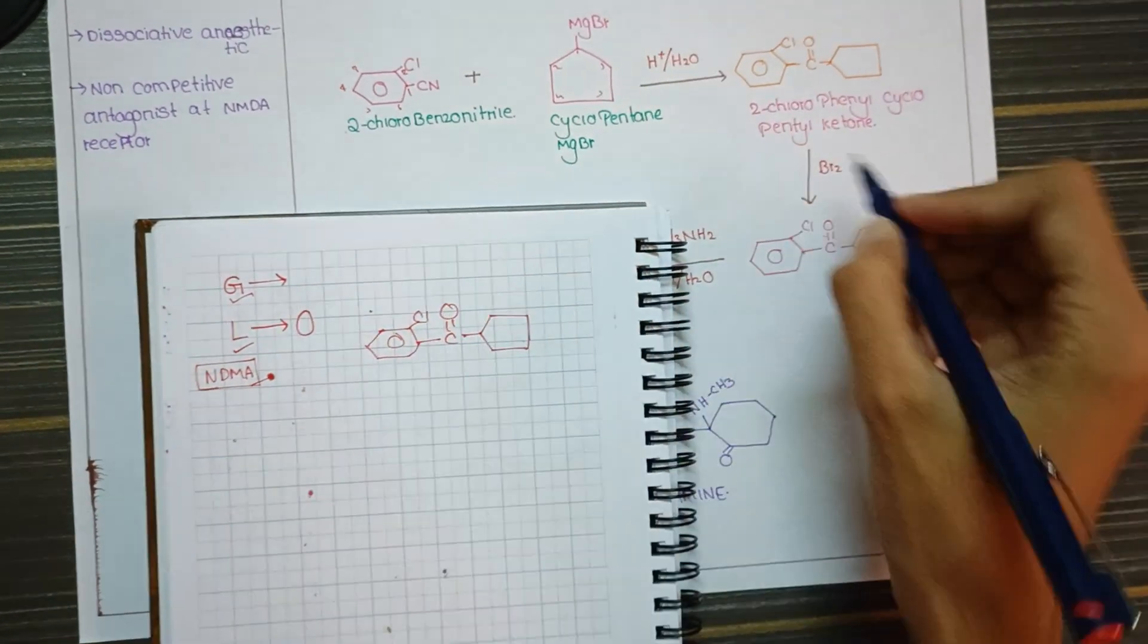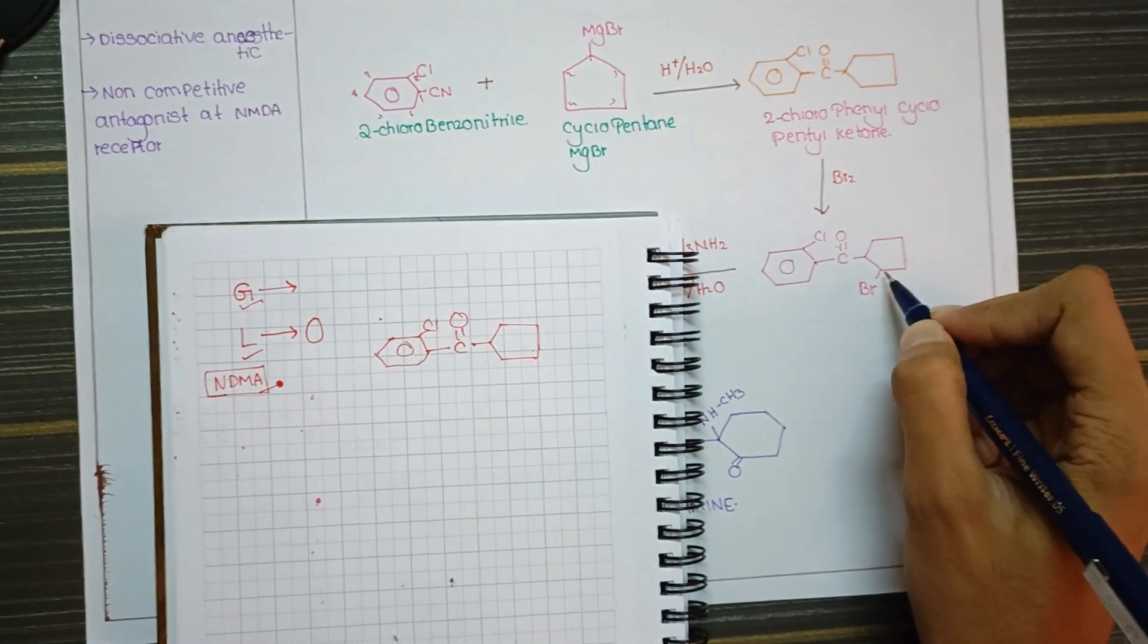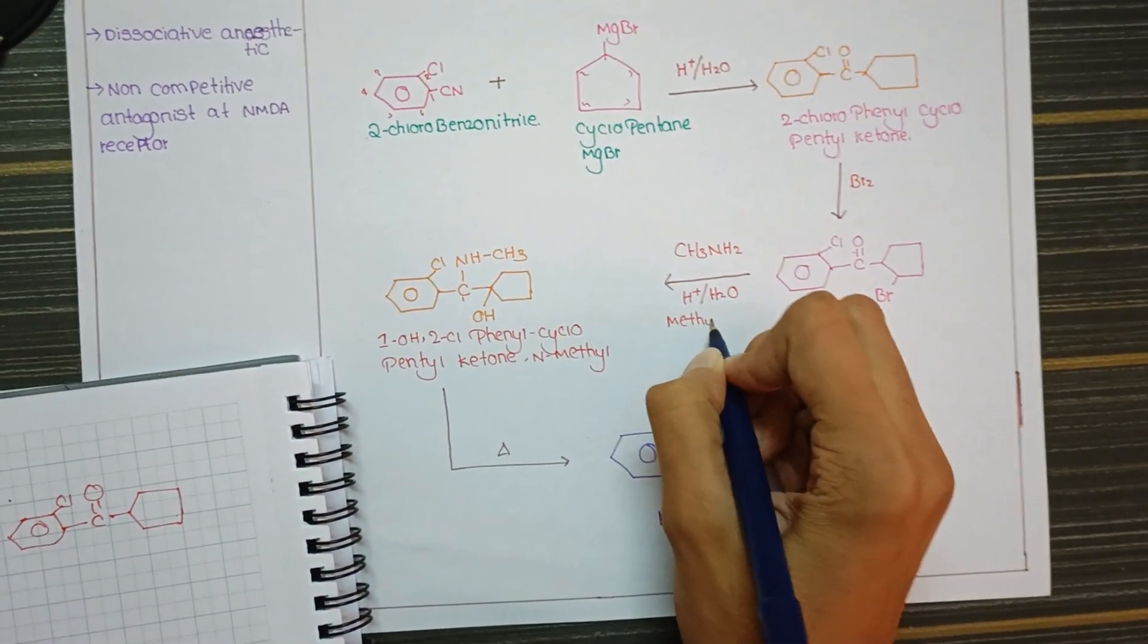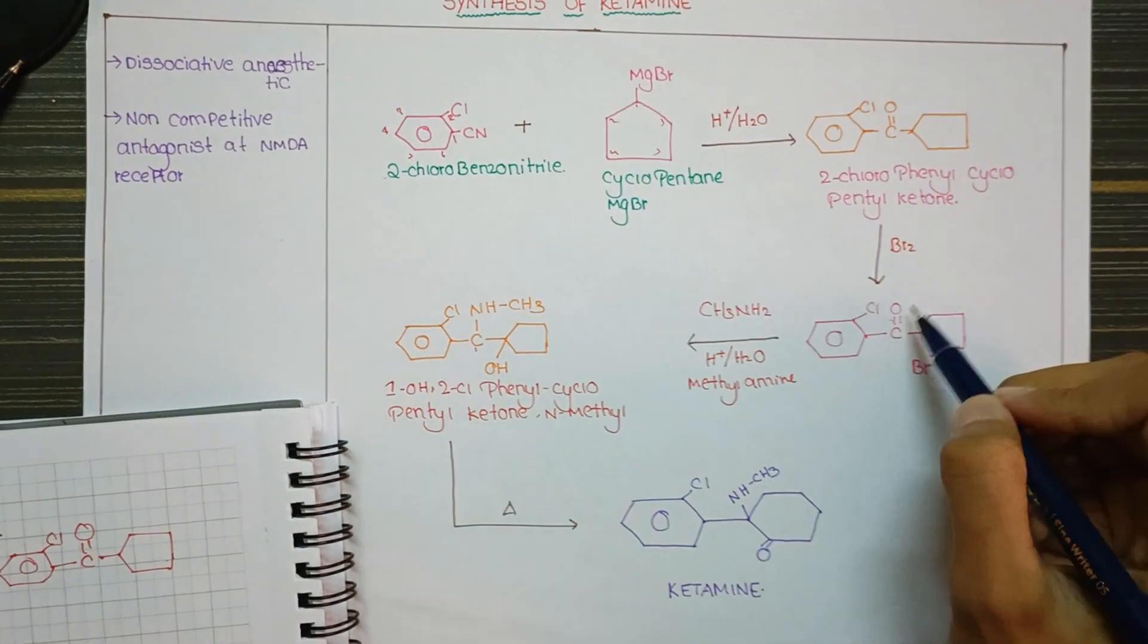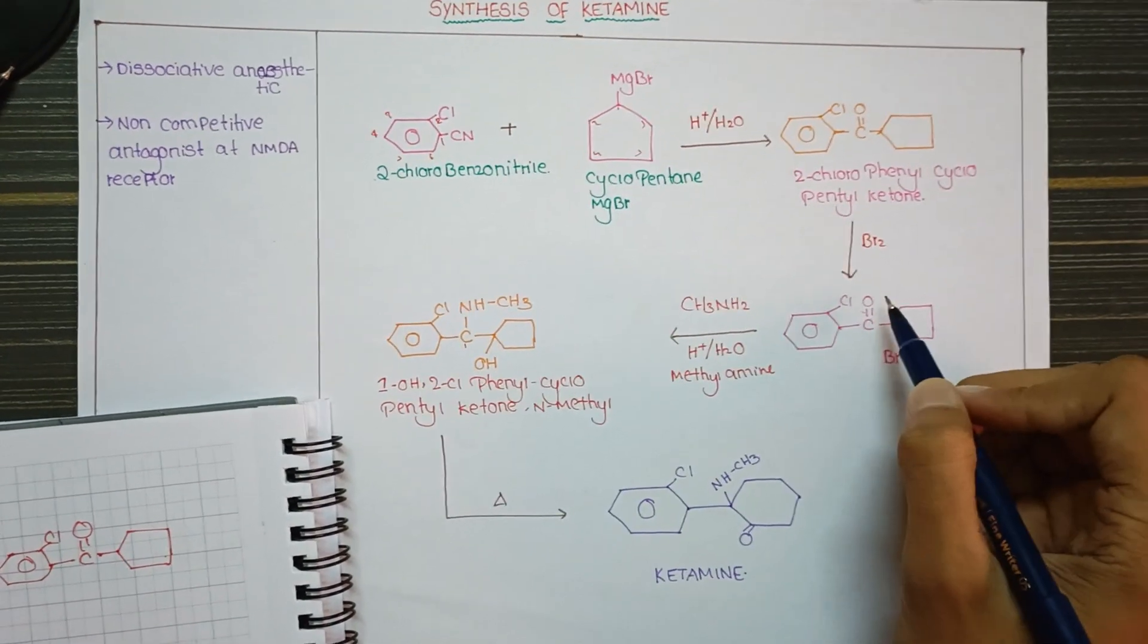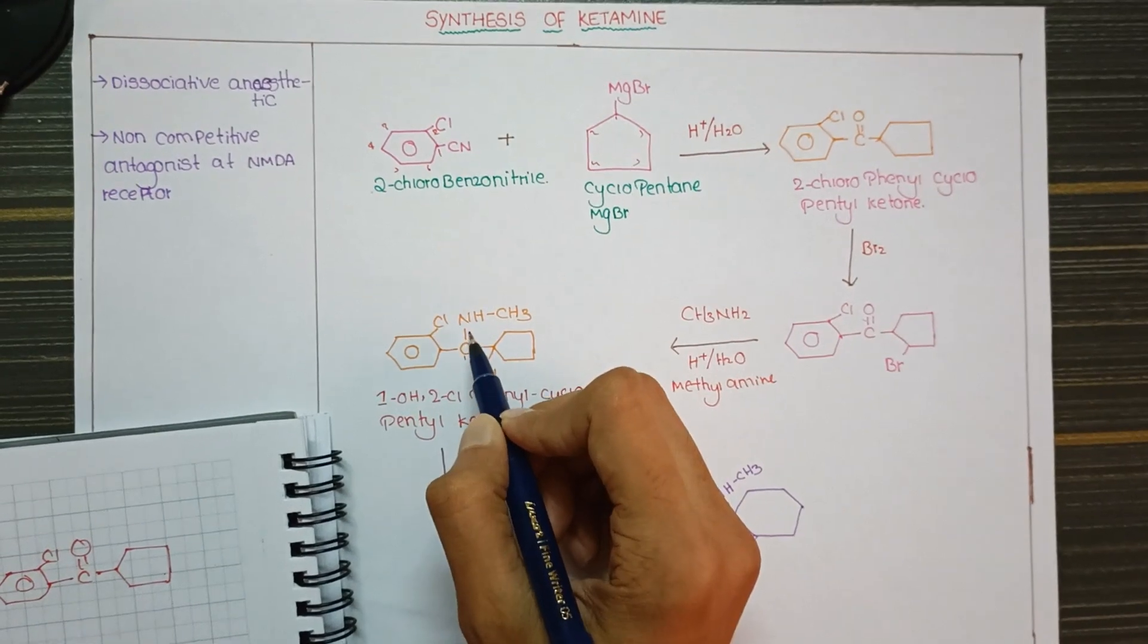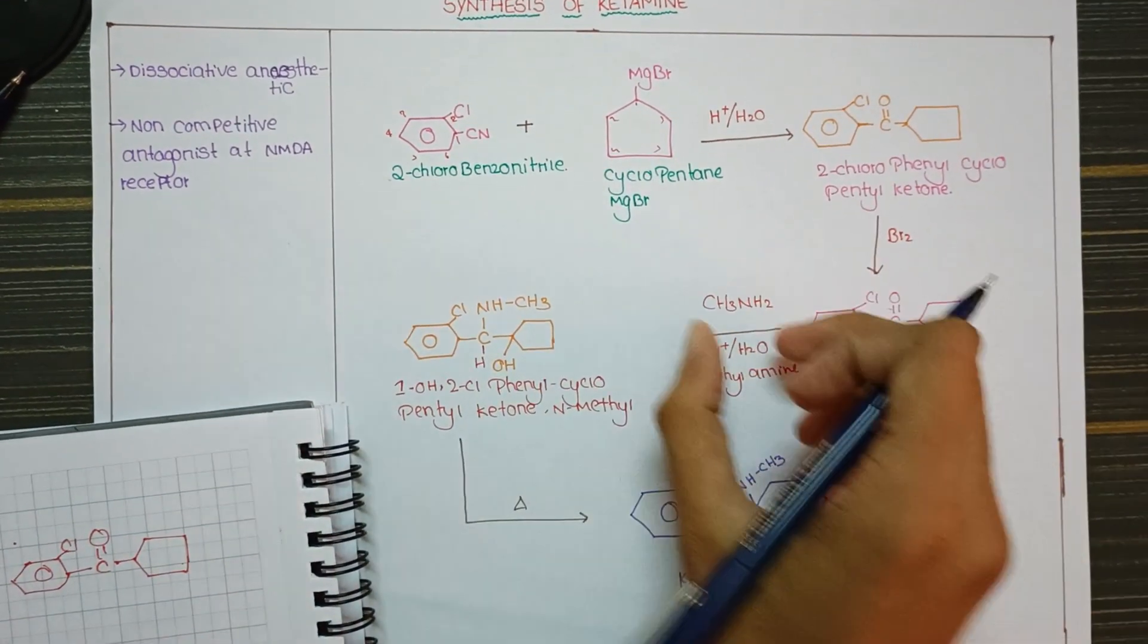We will make this compound react with bromine. In cyclopentane at the second position, we will get bromine. Next, we treat with methylamine. The methylamine treatment causes the oxygen double bond to be lost, and we get NHCH3 group.